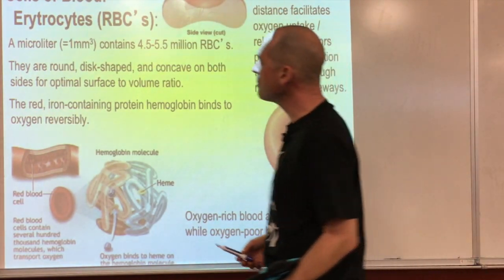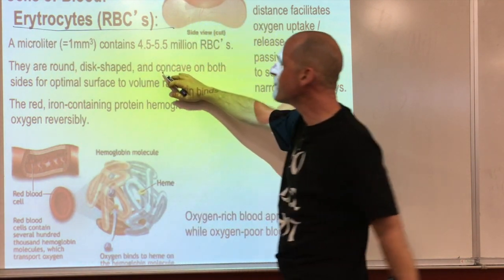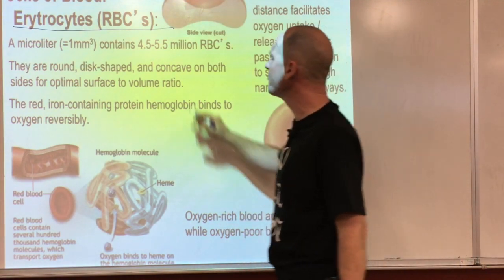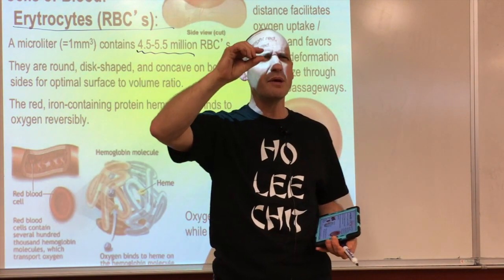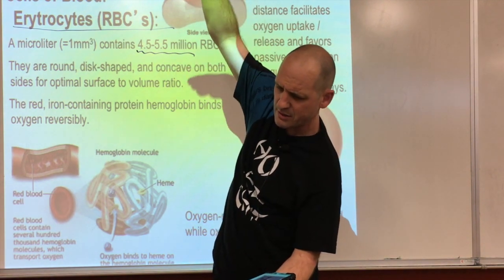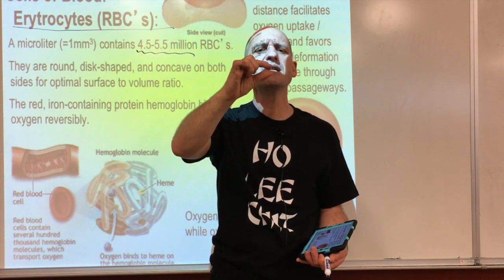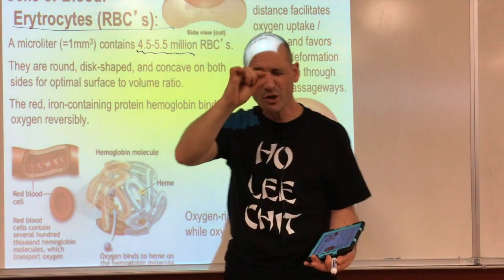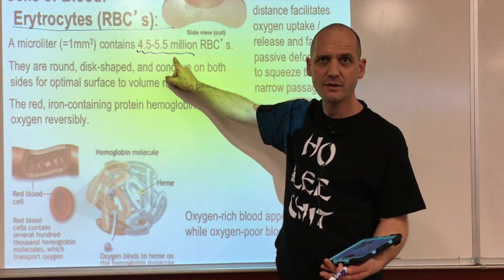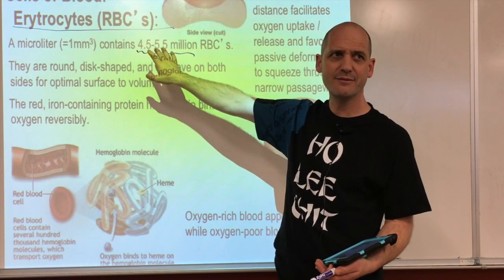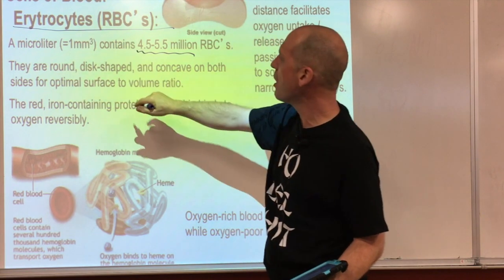The main cells of blood are red blood cells - erythrocytes. Per microliter we have about four and a half to five and a half million red blood cells. A microliter is an extremely small cube - about a millimeter - and it contains four to five million cells. That's just a lot.